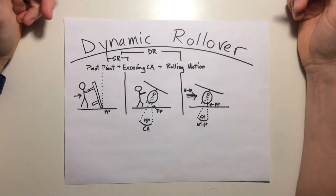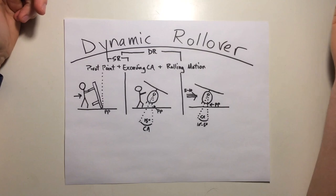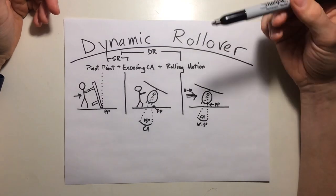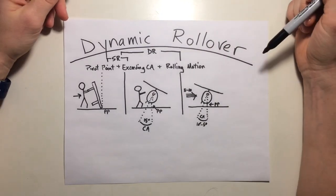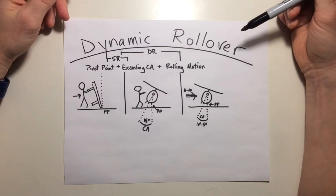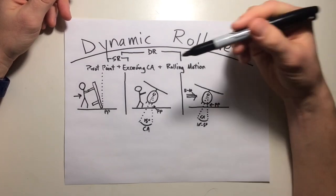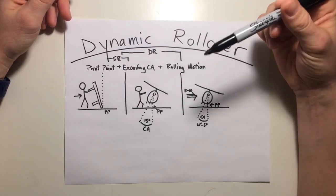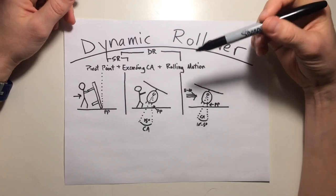Alright, well that wraps up part one of dynamic rollover. We covered what is static rollover and dynamic rollover with a pivot point exceeding the critical angle and rolling motion. In part two, I want to go over some of the causes, the physical and the human factors associated with it, as well as how to avoid it.